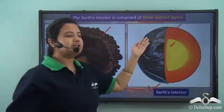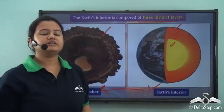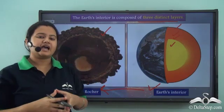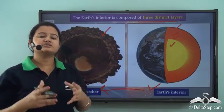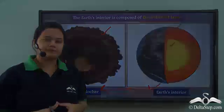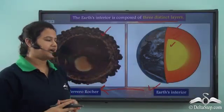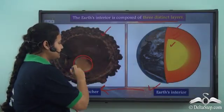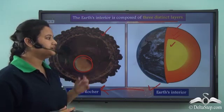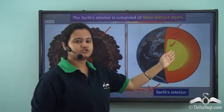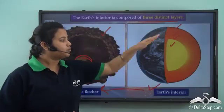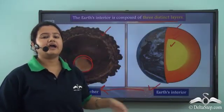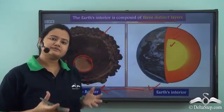The second or middle layer of the Earth is in a semi-solid state and is mostly composed of molten soft rocks. And just like the chocolate has a whole hazelnut at its center, the Earth's central part is also solid. Now let us see what these three layers are called and what their properties are.